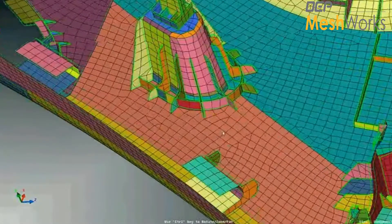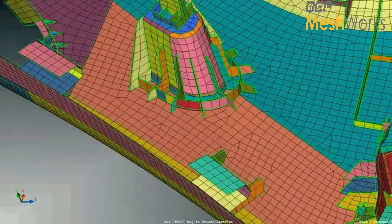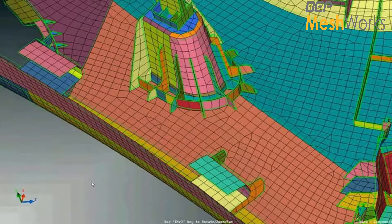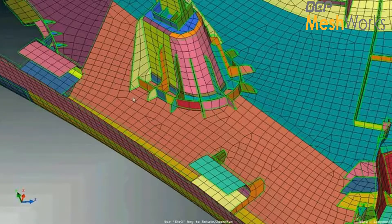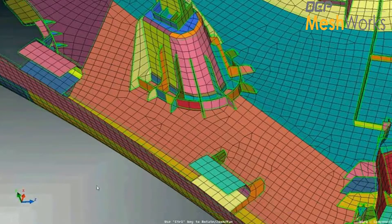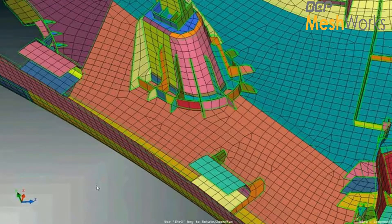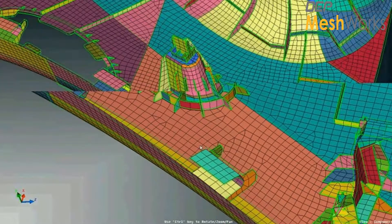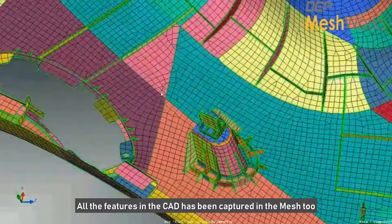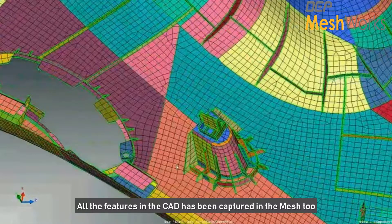So the next one where problematic areas are going to come is how do we do the mesh modification very quickly. That is, if at all we need to do any kind of stitching or feature insertion manually, that is possible, and I'm going to take care of that in the second part of the demonstration. As you can see, this is the output, and all the features that are there in the CAD have been captured in the mesh also.